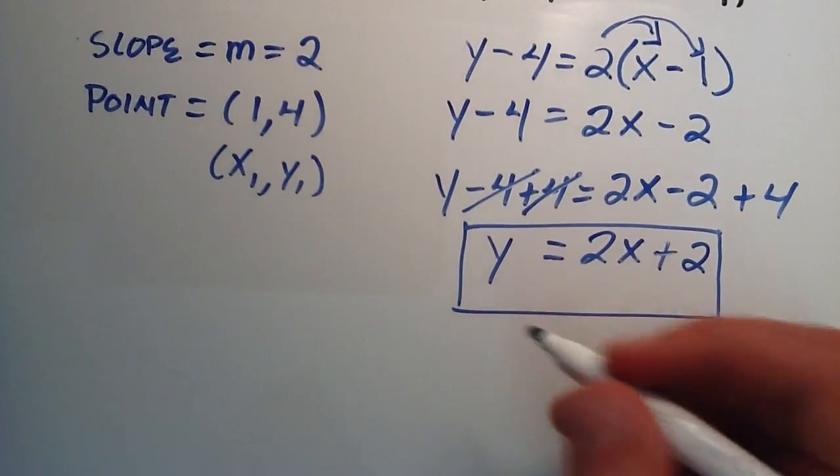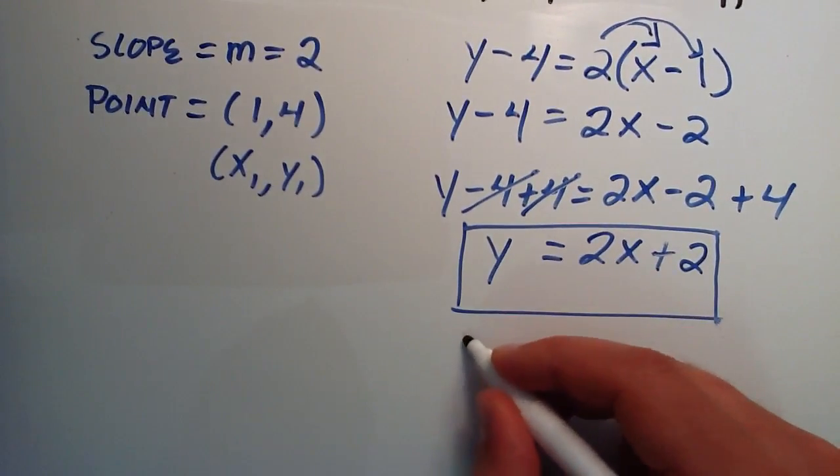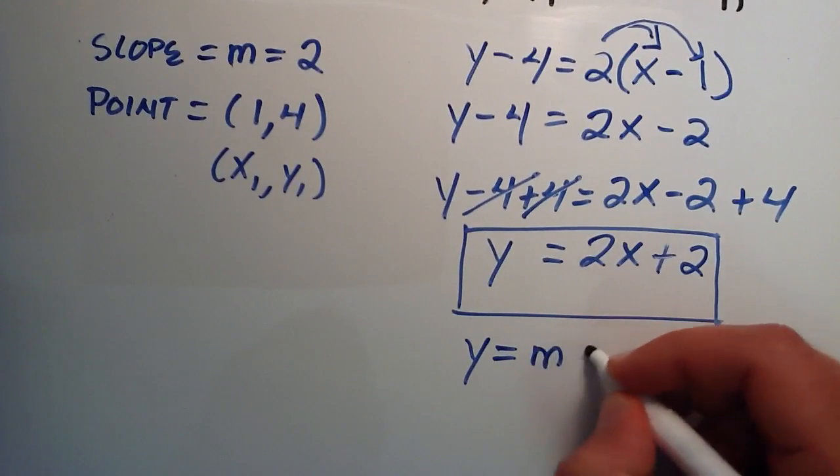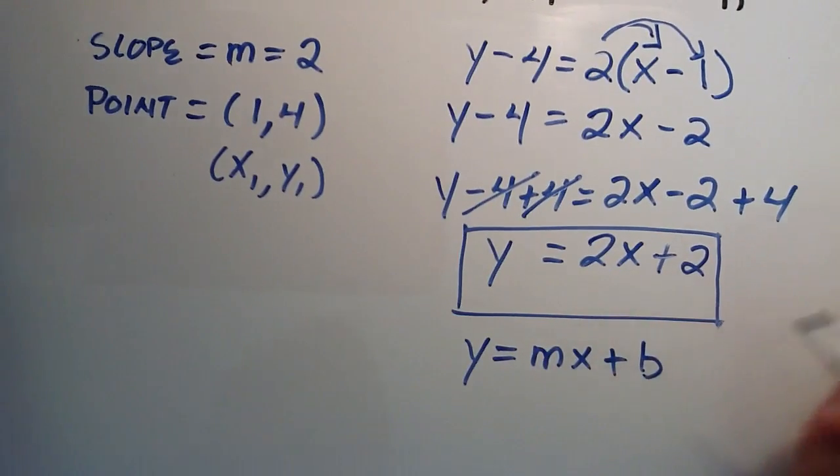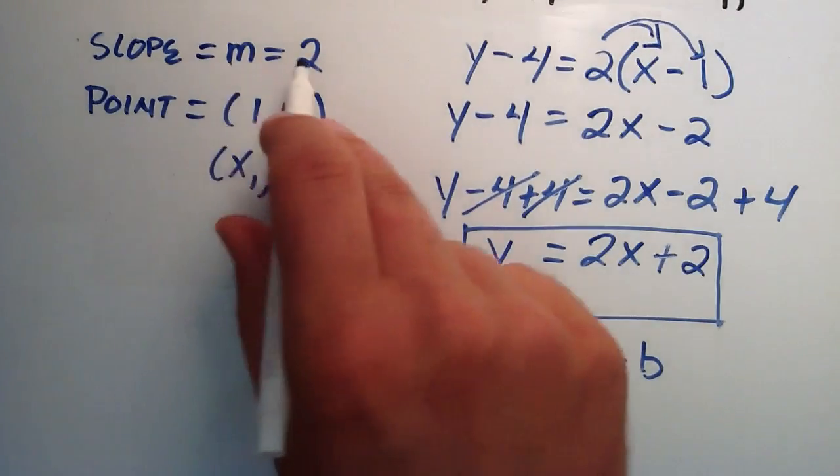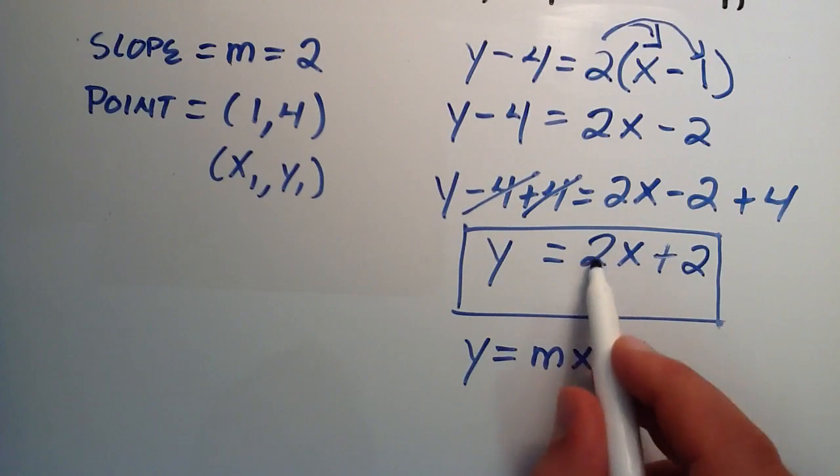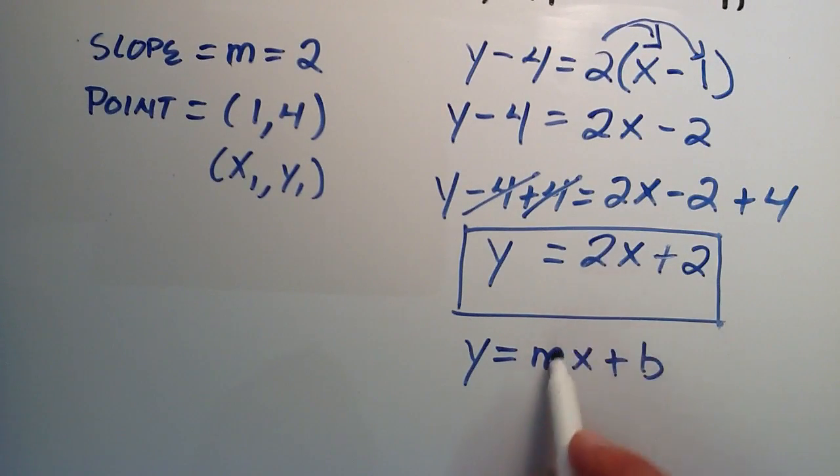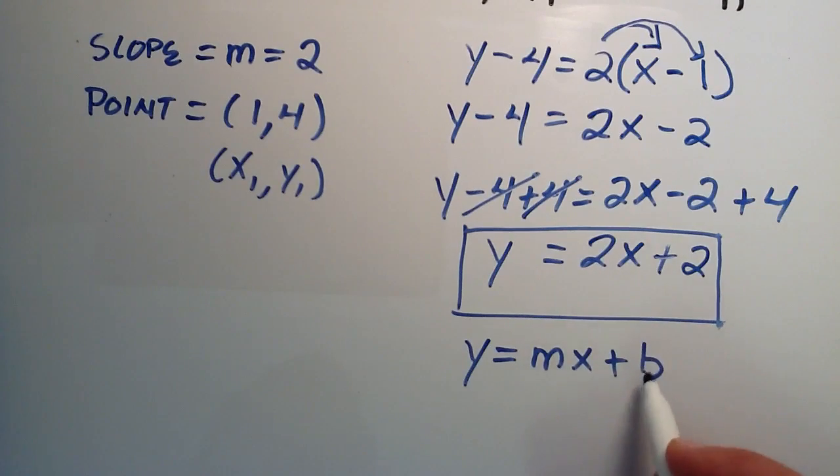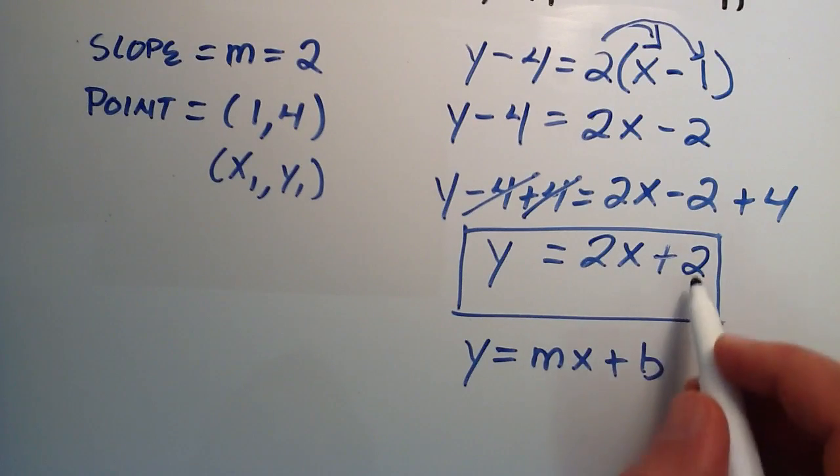So just to recall from last lesson, the slope-intercept form is y = mx + b, and m is our slope, which was 2, so that corresponds correctly because we have a 2 here and m here. m equals 2, x is x. Our b is where it crosses the y-axis.